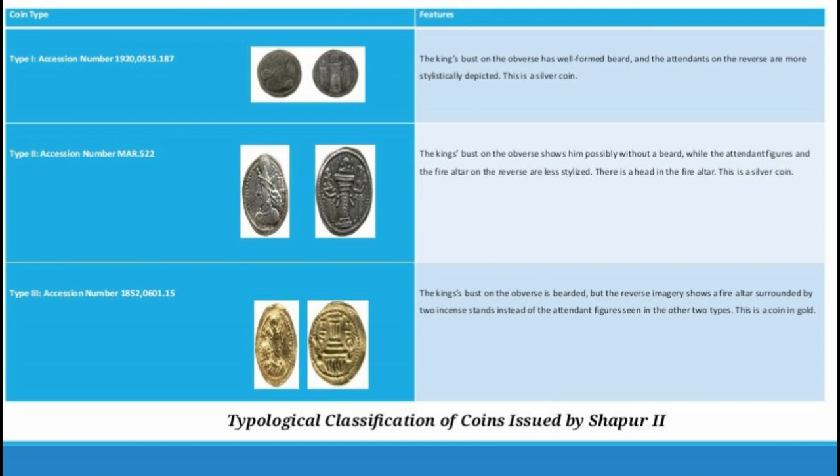The third type has the king's bust on the obverse and on the reverse, the fire altar — fire on the standing altar in the middle — but on either side, instead of human attendant figures, there are something like incense stands shown in a standing motif. These are the three basic types of coins, made of both gold and silver.